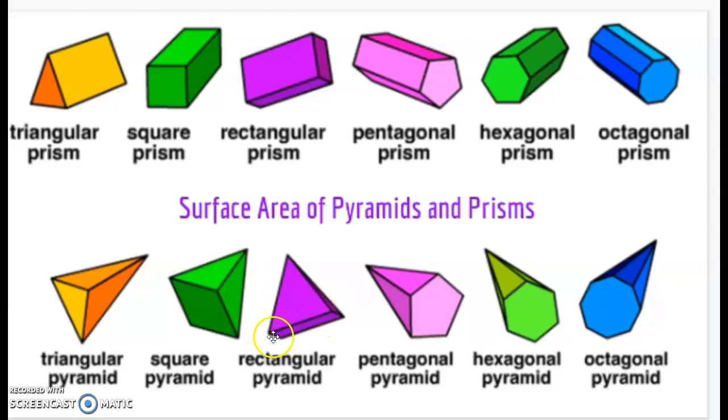Here we have a rectangular pyramid, so our base is a rectangle. A pentagonal pyramid where we have our base as a pentagon, a hexagonal pyramid, and an octagonal pyramid. So again, thinking about naming these shapes will be important as we move to problem solving.